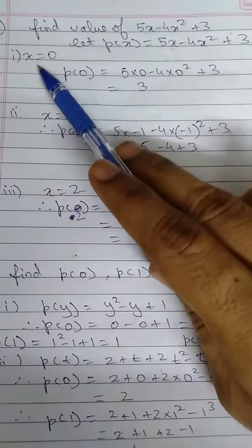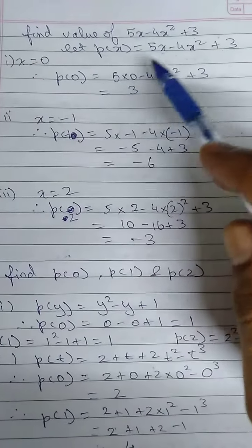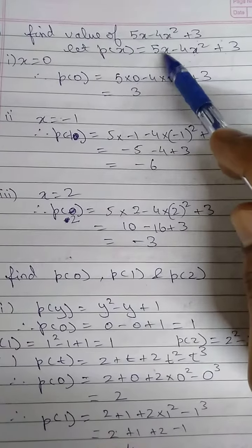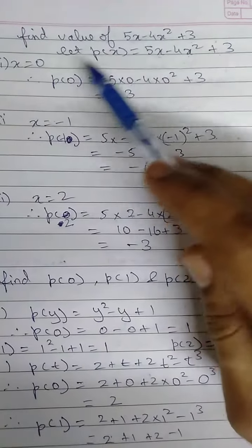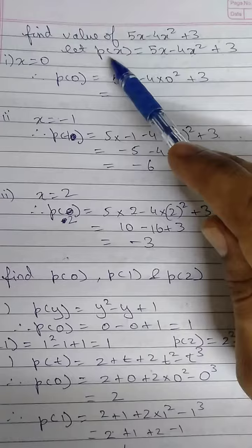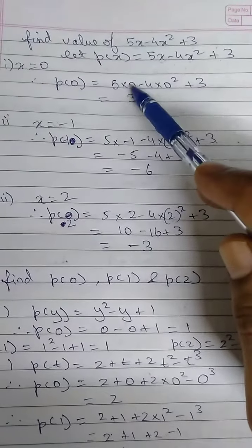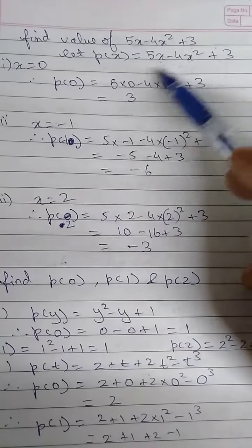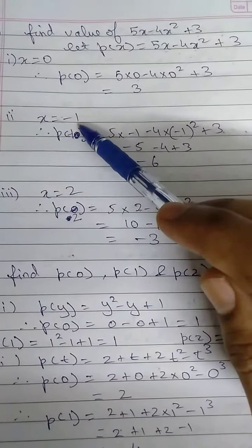First value is when x equals 0. When x equals 0 means wherever you find x in this polynomial, you will replace that x with 0. So this is 5x minus 4x square plus 3. You substitute x equals 0. Since we have assumed this polynomial as p(x), I will write this as p(0), and this becomes 5 into 0 minus 4 into 0 plus 3. Wherever we had x, we replace that x with 0, and hence the answer is 3.